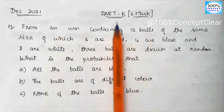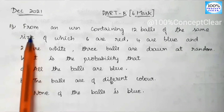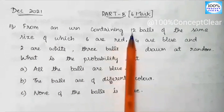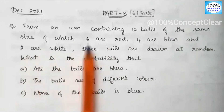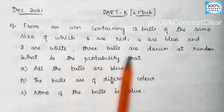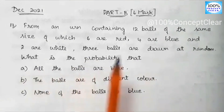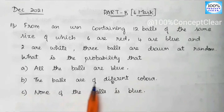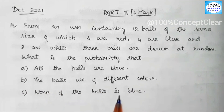We will start with Part B, that is 6 marks, beginning with the 13th sum. The question: a bag contains 12 balls of the same size, of which 6 are red, 4 are blue, and 2 are white. 3 balls are drawn at random. What is the probability that: A) all the balls are blue, B) the balls are of different colours, and C) none of the balls is blue.